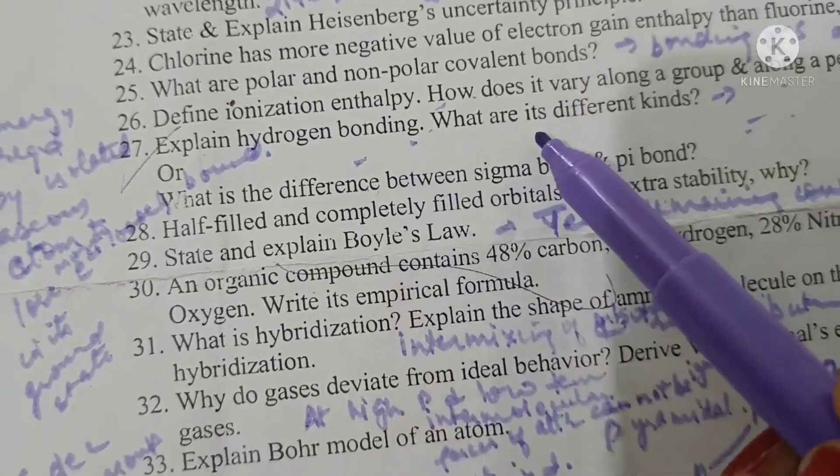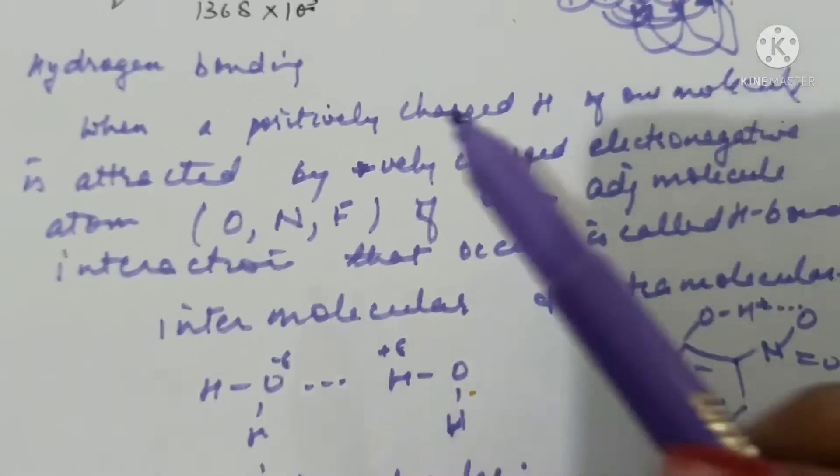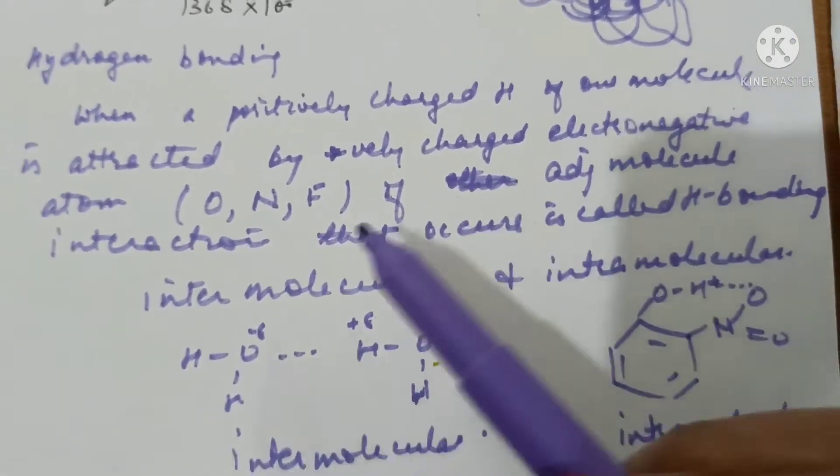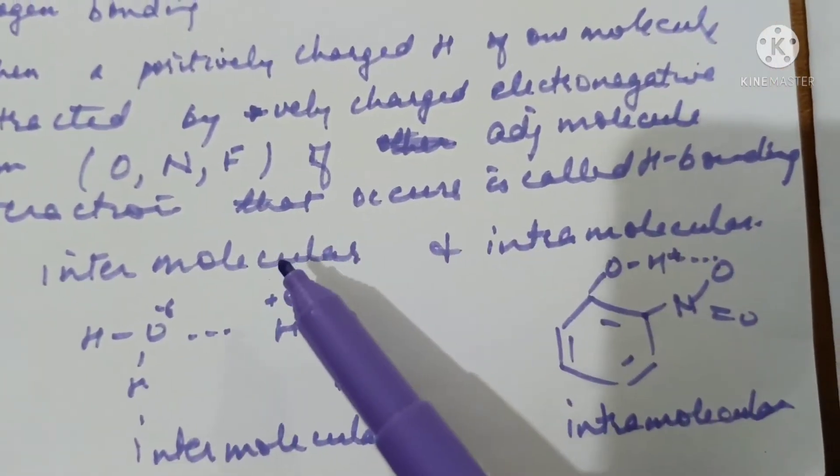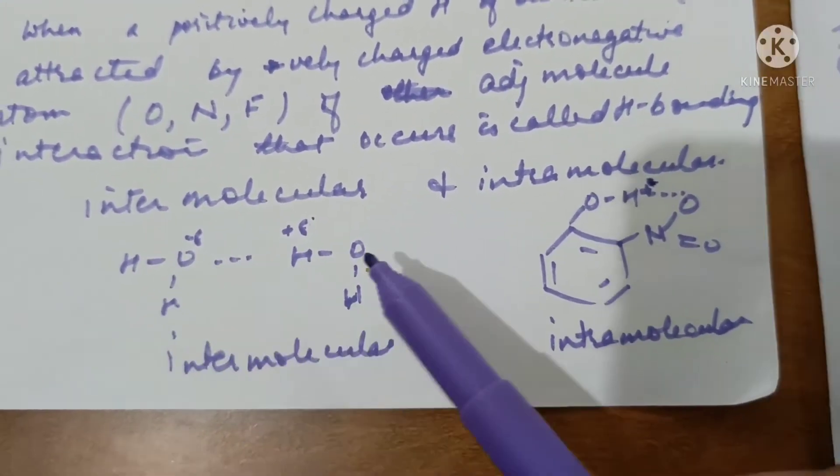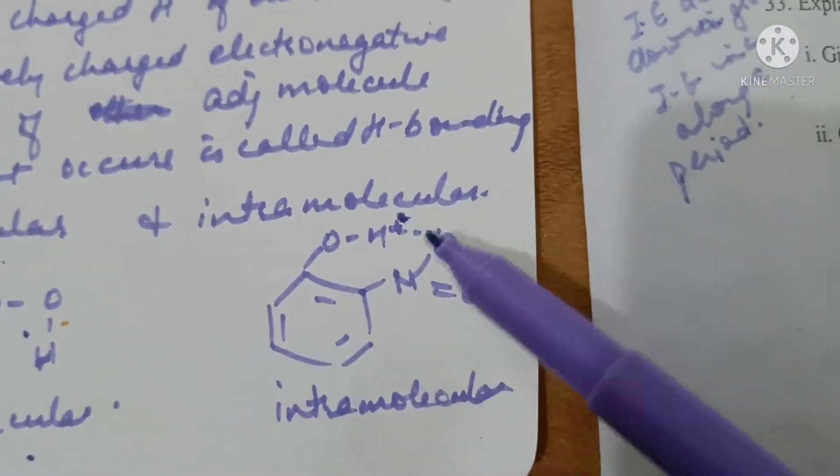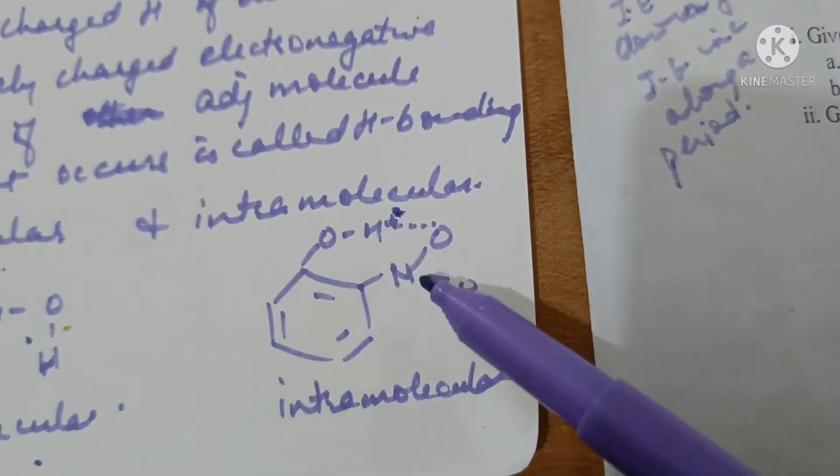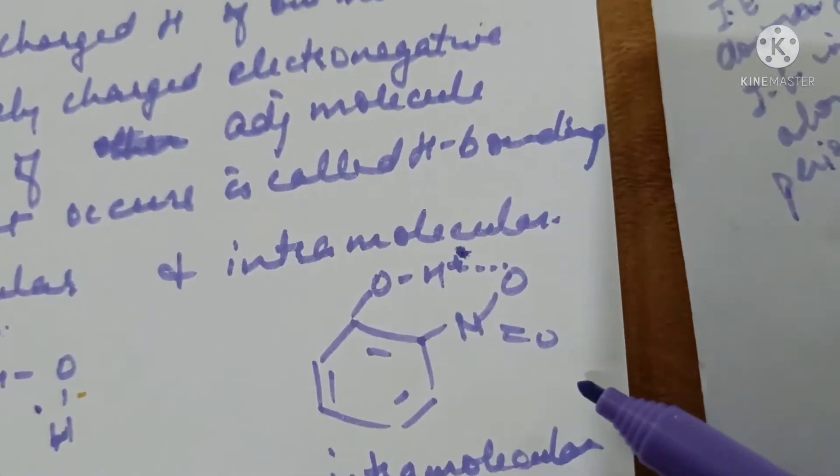Explain hydrogen bonding, what are its different types? When a positively charged hydrogen of one molecule is attracted by negatively charged electronegative atom oxygen nitrogen or fluorine of adjacent molecule then interaction that occurs is called hydrogen bonding. It is of two types intermolecular and intramolecular. When the hydrogen bonding is between two different molecules then it is called intermolecular hydrogen bonding for example water and when it is within the same molecule for example in orthonitrophenol the hydrogen atom of OH group will show hydrogen bonding with oxygen atom of adjacent nitro group then it is intramolecular hydrogen bonding.